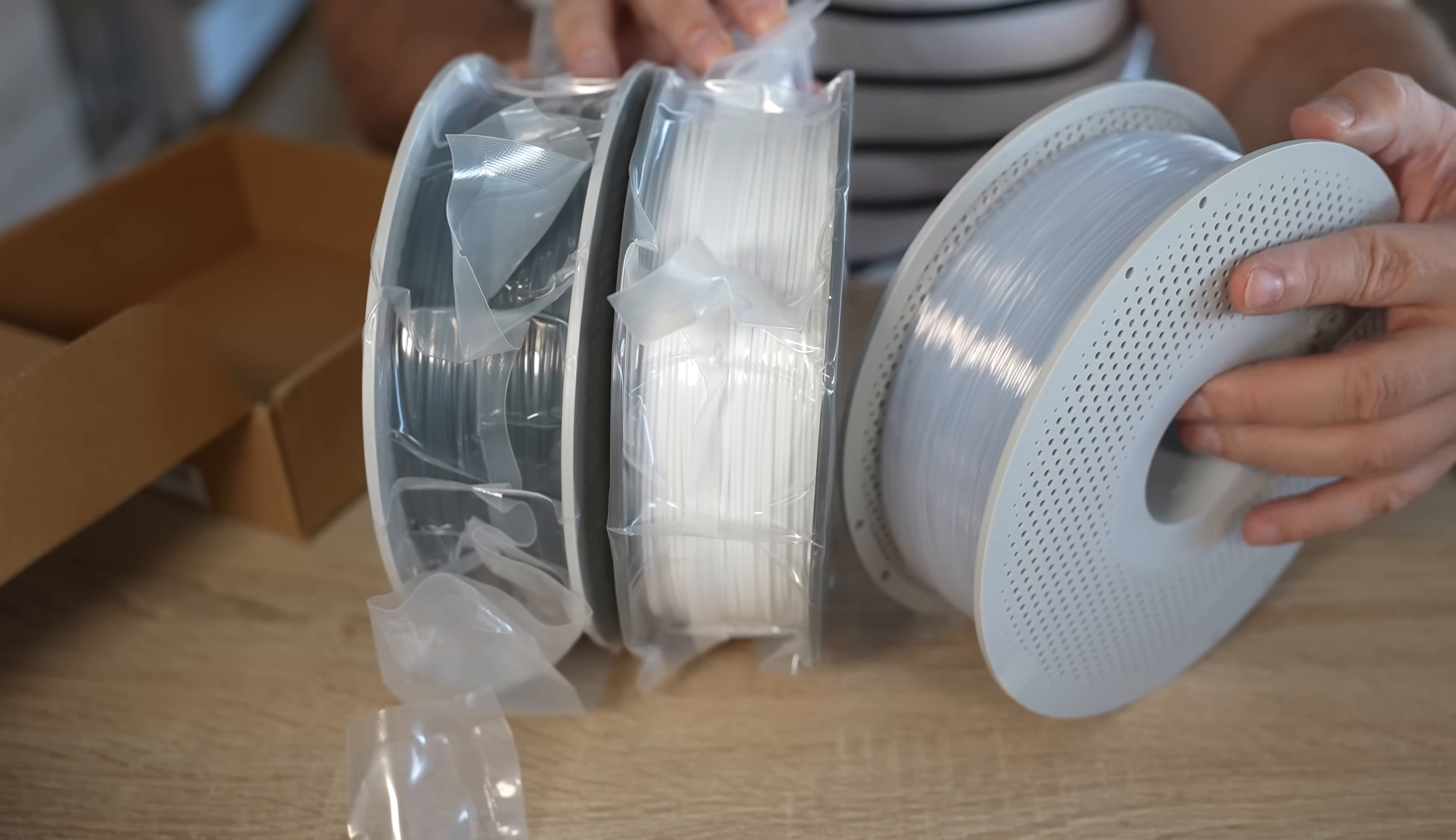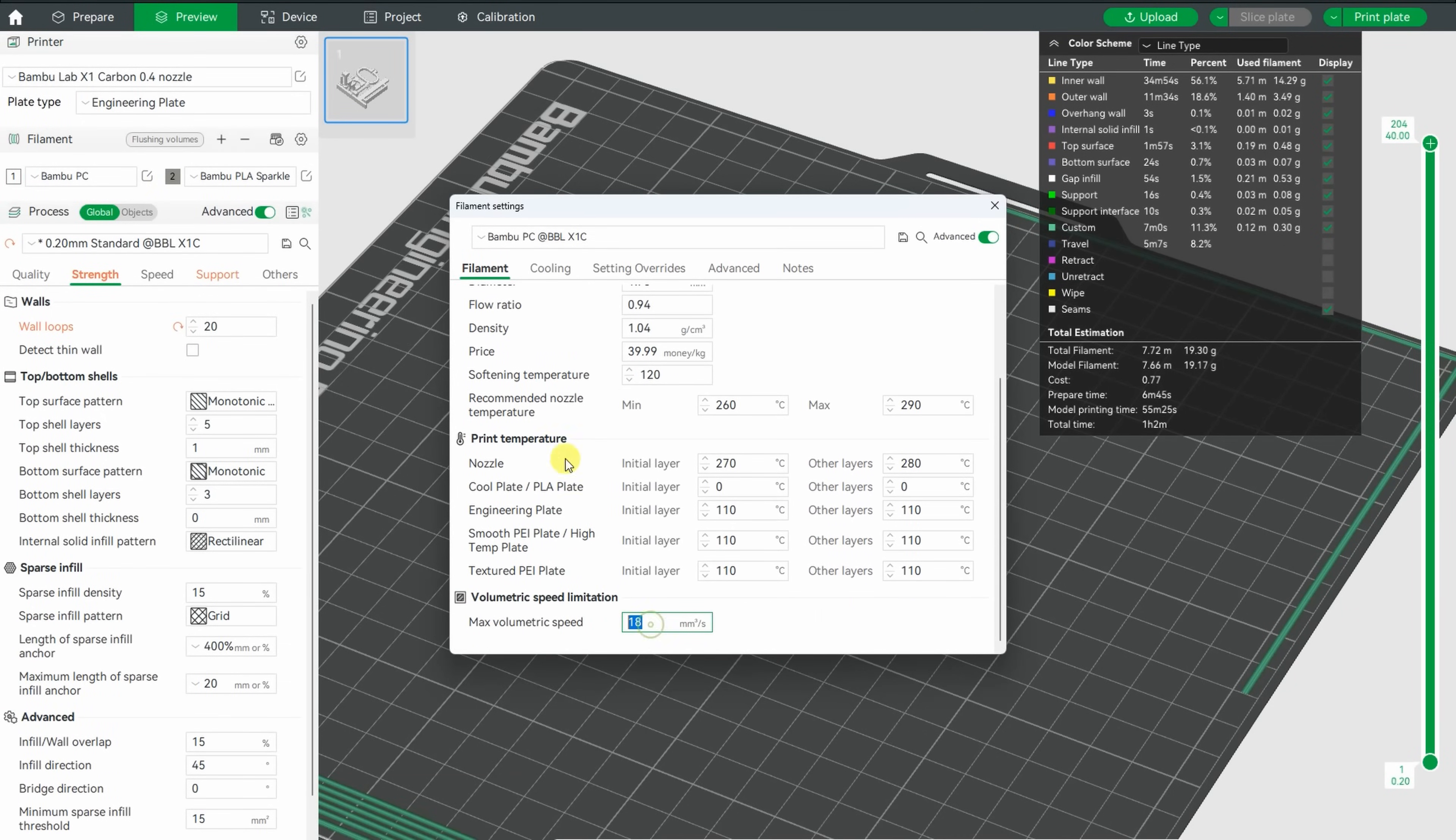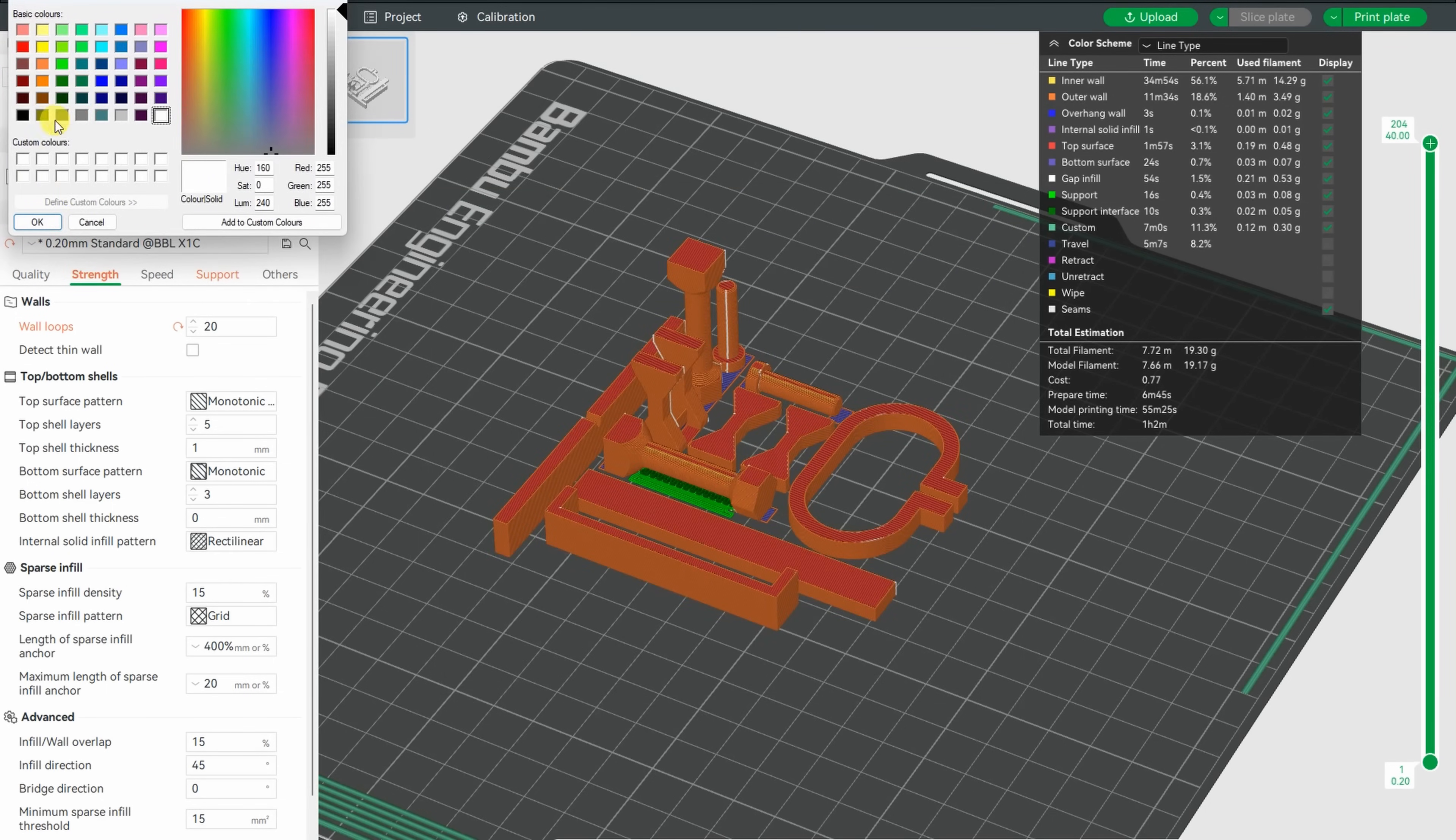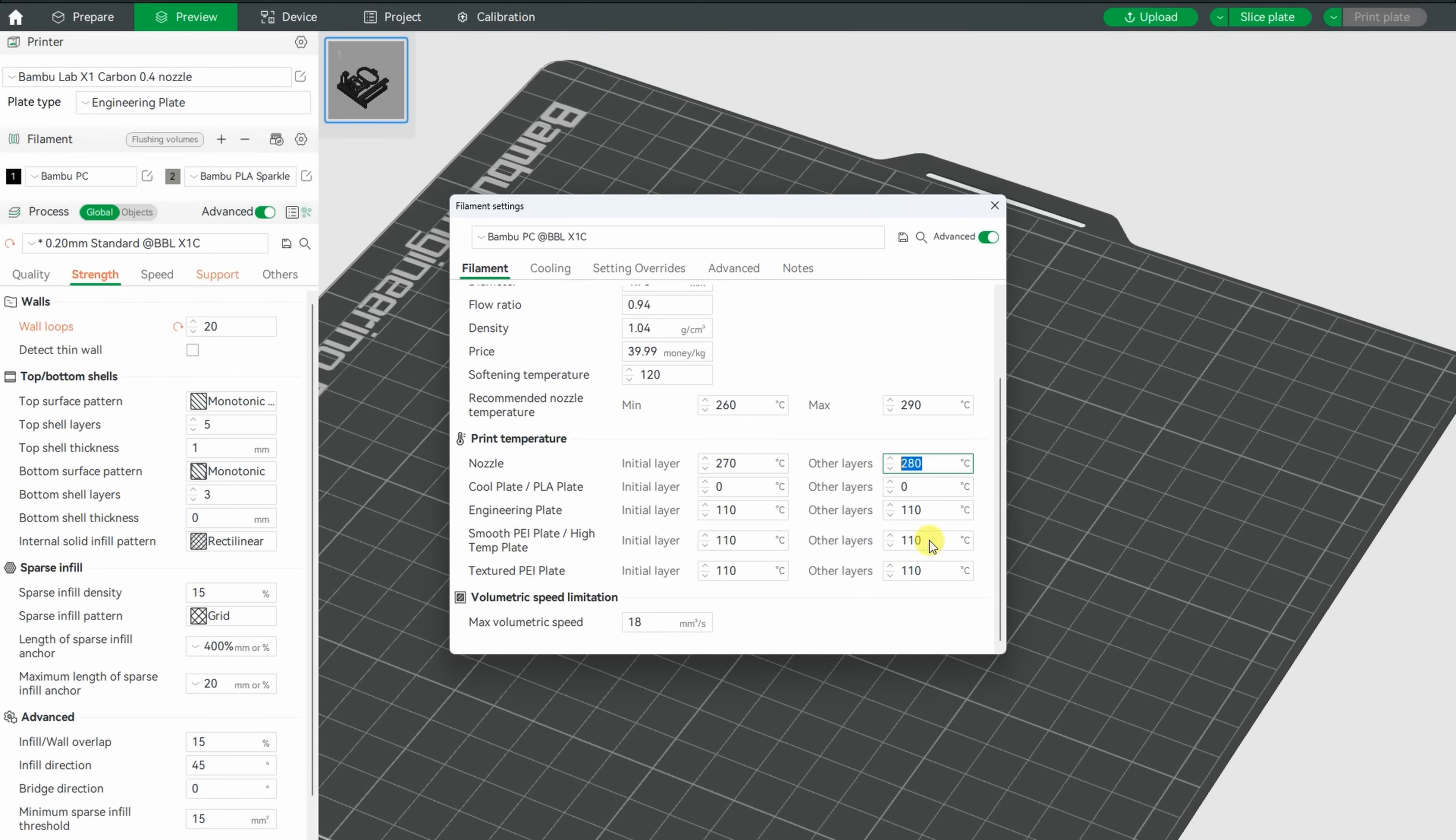I start with the transparent one. These are my test objects in the slicer and let's see the default settings: 280 degrees Celsius, 110 on the bed, and 18 is the flow rate. These are the cooling settings and I also checked if I change the color if those settings will be changed, but no, it still has the same print temperature.